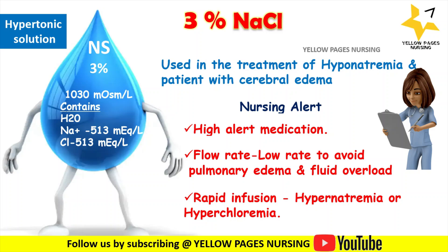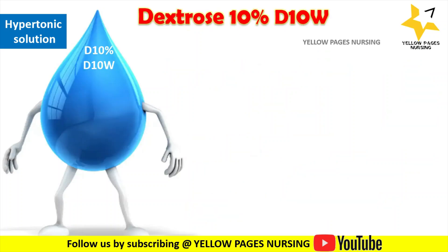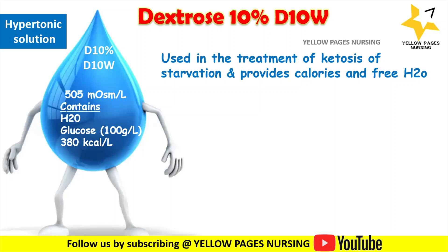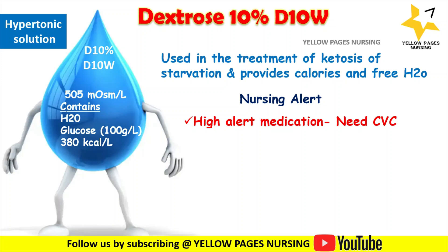The next hypertonic solution is Dextrose 10% in Water (D10W), with an osmolarity of 505 milli-osmol per liter. Contents include water, glucose 100 grams per liter, and 380 kilocalories per liter. It is mainly used to treat ketosis of starvation and to provide calories and free water. As with all hypertonic solutions, use of a central line is always preferred to avoid peripheral IV complications.